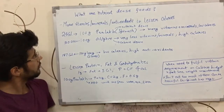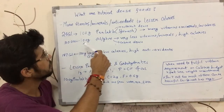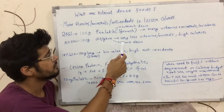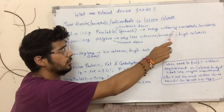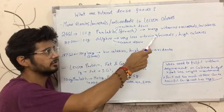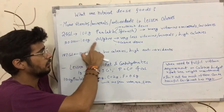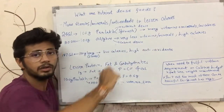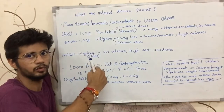Let's understand this with an example. 100 grams of spinach has around 24 calories, while on the other hand, 100 grams of oil or ghee has 900 calories. So 100 grams of spinach at just 24 calories will give us a lot of vitamins and minerals, while 100 grams of oil at 900 calories would give us very few vitamins and minerals. In very few calories, spinach is giving me a lot of vitamins and minerals — so it is a nutrient dense food.